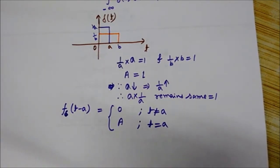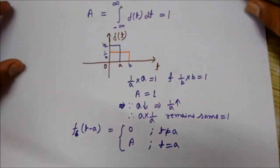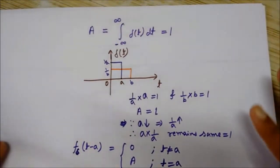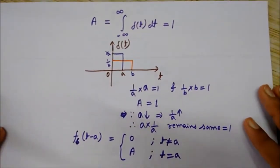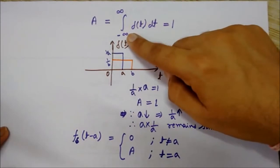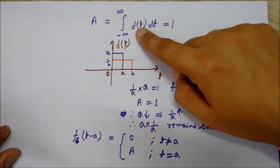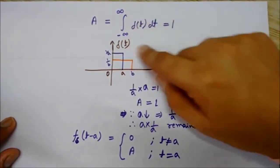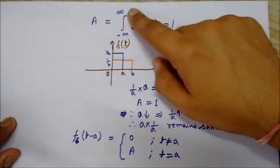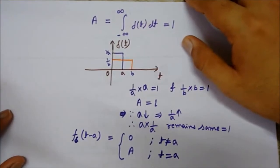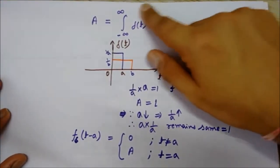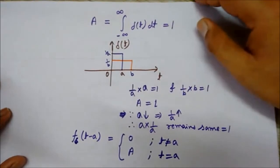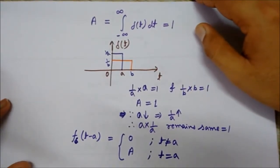We can define the area of the unit impulse signal as the integration from minus infinity to infinity of delta(t) dt. So we have defined it for all values of t from minus infinity to infinity with respect to time, and it is equal to one. So 'a' is always equal to one for the unit impulse signal.